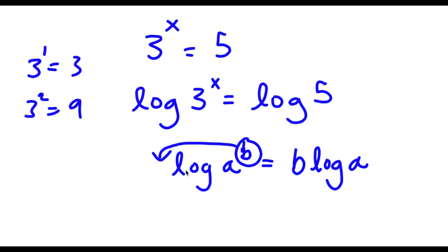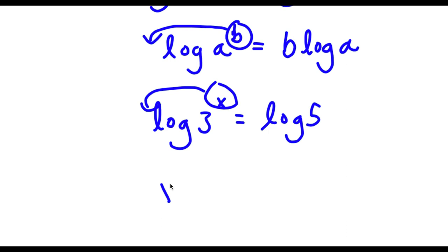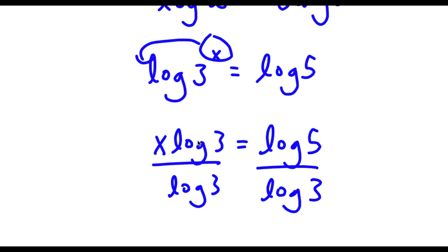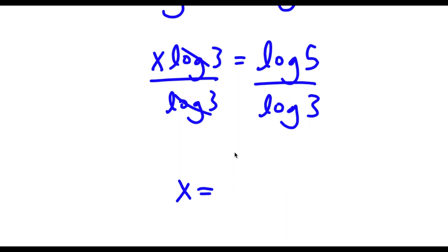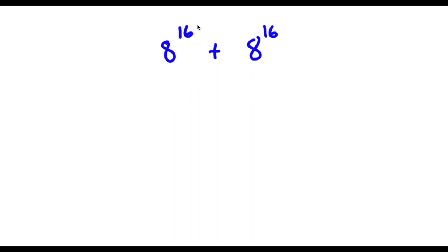So now if we move x to the front, x will be a real term and it's going to be much easier to solve for it. So I have log 3 to the power of x is equal to log 5. And now if I move x to the front, I get x times log 3 is equal to log 5. And now if I divide both sides by log 3, these two cancel out and I'm left with x is equal to 0.699 over 0.477. So this is my answer.